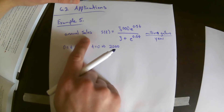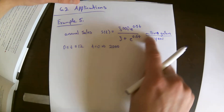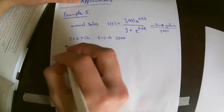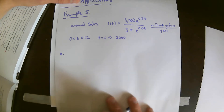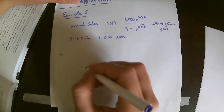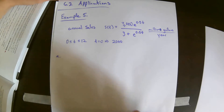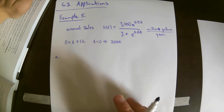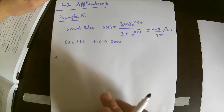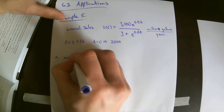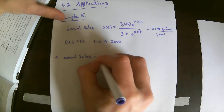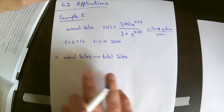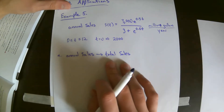This annual sales is measuring millions of gallons per year — it's a rate. In part A, they want an expression for the total amount sold since 2000. So we're going from annual sales, a rate of sales per year, to total sales. That's going to be the operation of integration — going from a rate of sales to total sales.